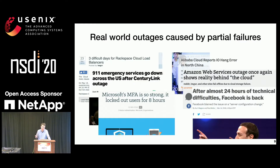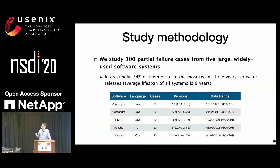Indeed, partial failures are behind many real-world outages. In this work, we try to first understand how partial failures manifest in modern software. So we conducted a study of 100 real-world partial failures from five large-scale open source systems. We studied 20 cases for each system. Interestingly, 54% of study cases occur in the most recent three-year software release, which suggests partial failure is a trend occurring as the software evolves.